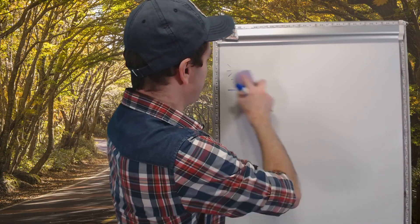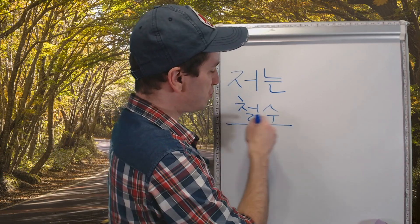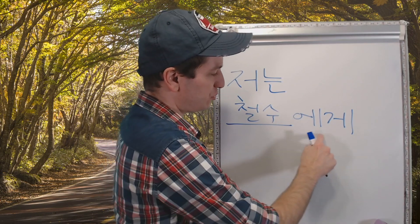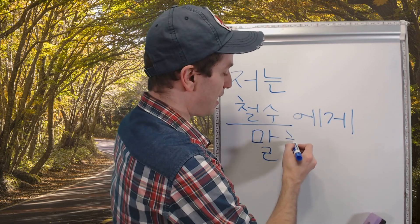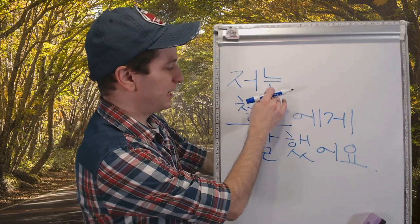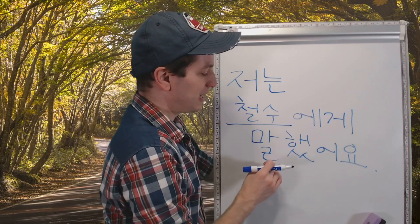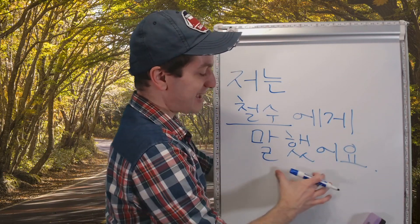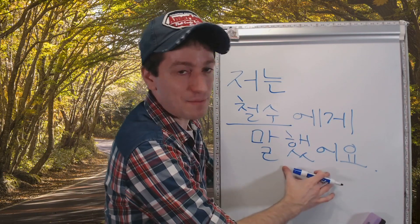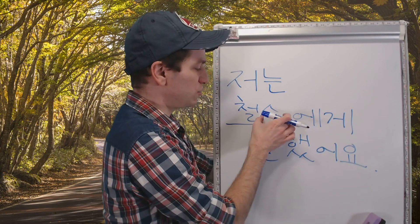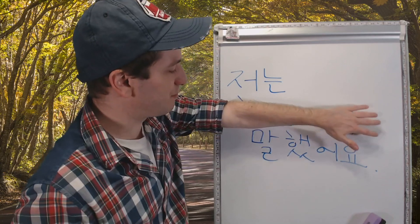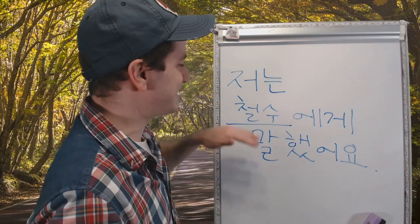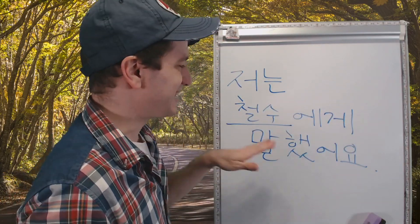So let's do our first example. 저는 찰수에게 - I, 찰수, to, or I to 찰수. 찰수에게 말했어요. 저는 찰수에게 말했어요. I said it, or I said something, to 찰수. Also notice the order that we have this in. It's not 저는 말했어요 찰수에게, but it's I, to 찰수, said it.